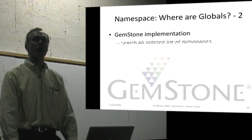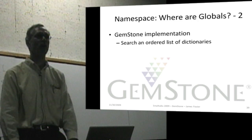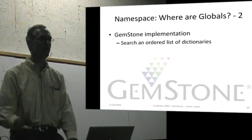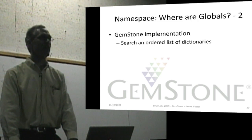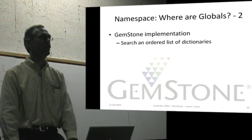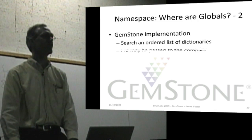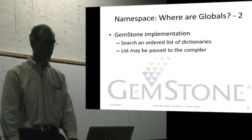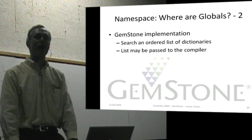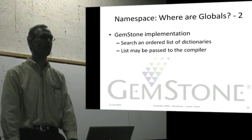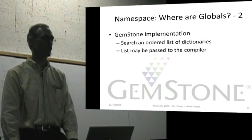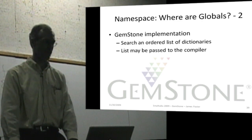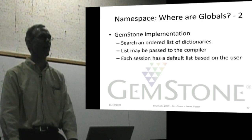In Gemstone, where are globals? When you compile a method, where does it look for the names? Well, in addition to the first six, once we get to globals, instead of having one dictionary, you can have an ordered list, an array of dictionaries. And rather than that being hard-coded in the VM, you can pass that list to the compiler. So for each method, you can identify a list of dictionaries that will be searched in order to find globals.